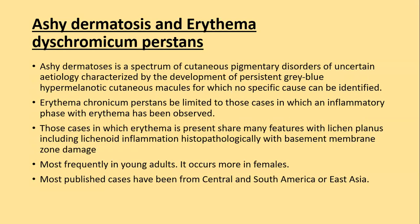Ashy dermatosis and erythema dyschromicum perstans represent a spectrum of cutaneous pigmentary disorder of uncertain etiology characterized by persistent gray-blue hypermelanotic cutaneous macules for which no specific cause is identified. Erythema dyschromicum perstans is limited to cases with an inflammatory phase with erythema. Those cases share many features with lichen planus pigmentosus, including lichenoid inflammation in histopathology with basement membrane zone damage. Ashy dermatosis is most frequent in young adult females and most published cases are from Central and South America or East Asia.